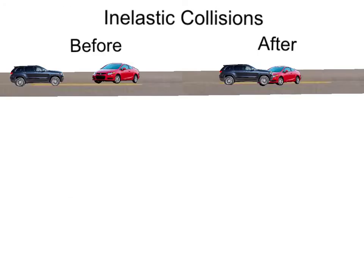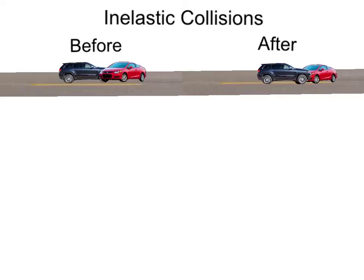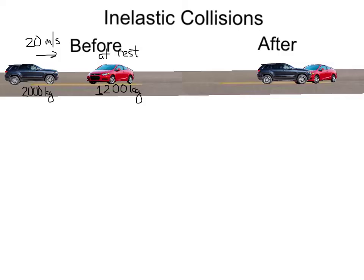Now let's look at momentum conservation in an inelastic collision. Here we have two cars — one is at rest, and the other comes in from the left, hits, and they both move off together afterwards as one object. The mass of the truck is 2,000 kilograms moving at 20 meters per second to the right. Before the collision, this car has a mass of 1,200 kilograms but is at rest.